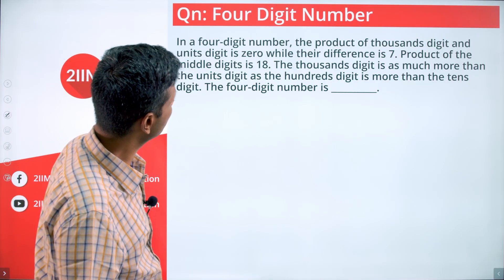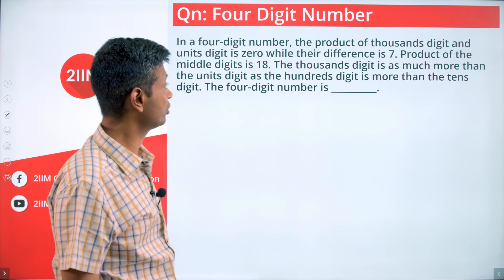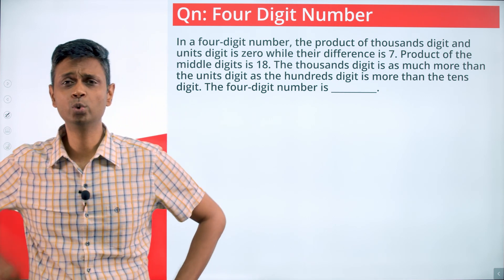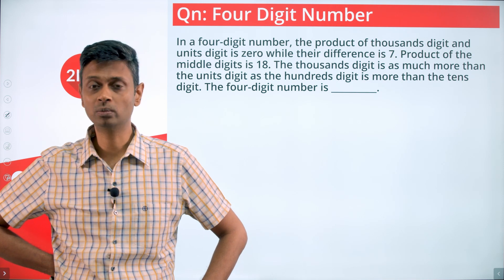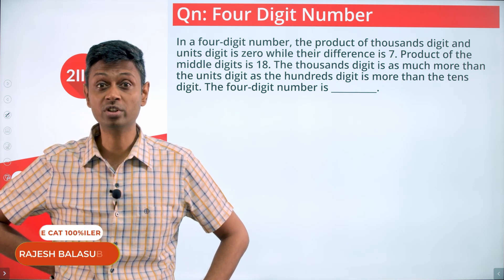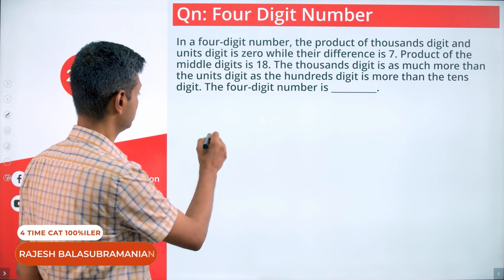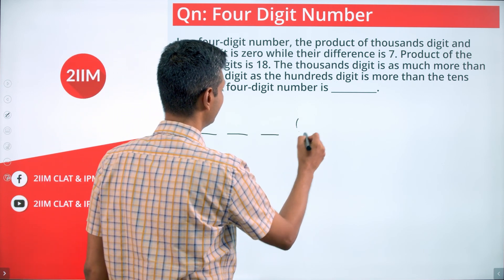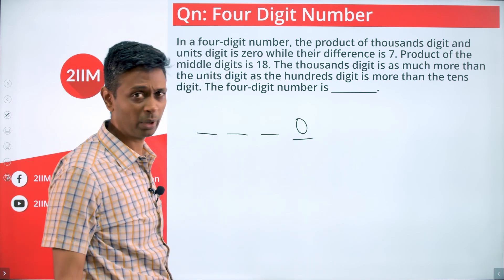In a four-digit number, the product of the thousands digit and the unit digit is zero. So one of the digits is zero. It's a four-digit number, the thousand digit cannot be zero. Unit digit is zero. Straight away we got that.